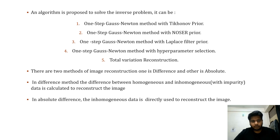There are two methods of image reconstruction: the difference method and the absolute method. In the difference method, the difference between the homogeneous and inhomogeneous sets of readings is calculated to reconstruct the image. In the absolute method, the inhomogeneous data is directly used to reconstruct the image using any of the five algorithms mentioned.